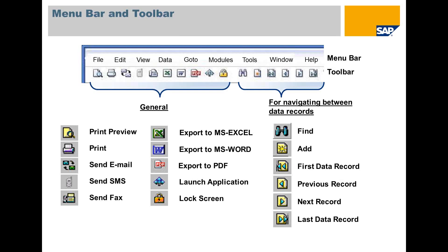You can choose the toolbars that will be displayed or hidden. To hide or show a toolbar, right-click on the toolbar area and check or uncheck the appropriate toolbar.